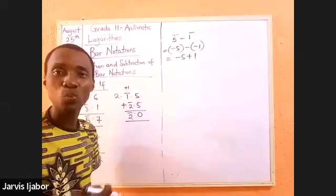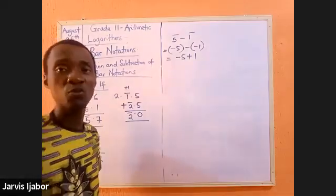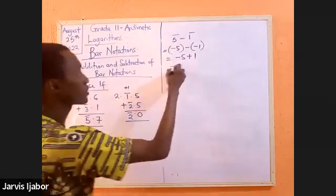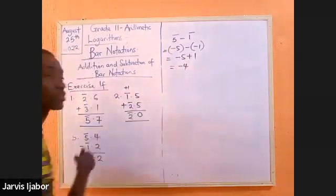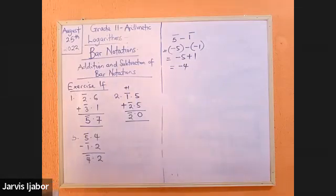Negative 5 plus 1 means move forward. Positive means move forward. So, negative 5 plus 1 will be negative 4, which in the context of logarithms, they will write as bar 4. So, this will be bar 4.2.